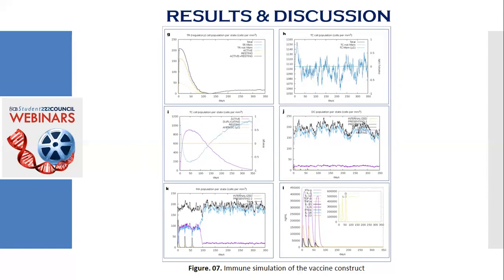Graph J shows the rise in the active dendritic cell population per state over the course. And K demonstrates the increment in the macrophage population per state over the course. And finally, graph L shows the augmentation in the concentration of different types of cytokines over the course. And finally, in the immune simulation, we have observed a gradual increase in all the analyses.